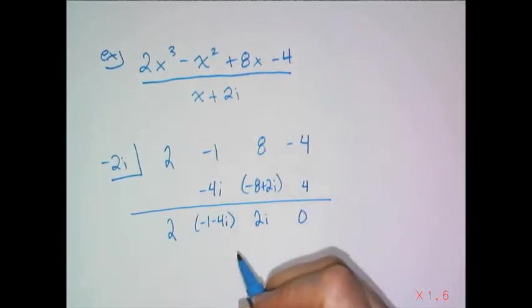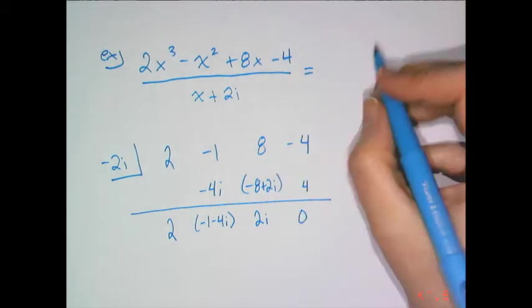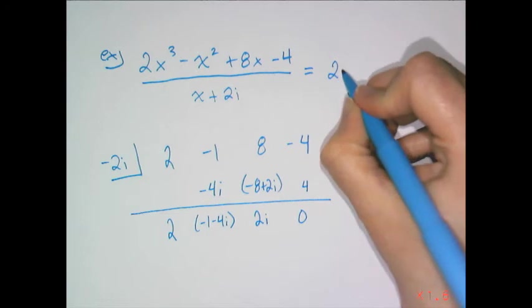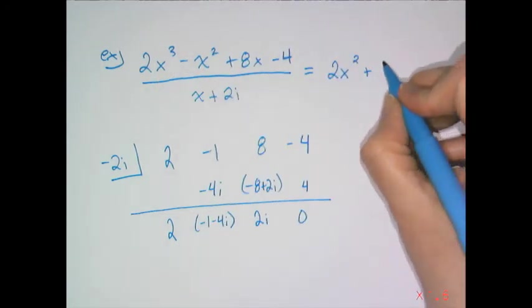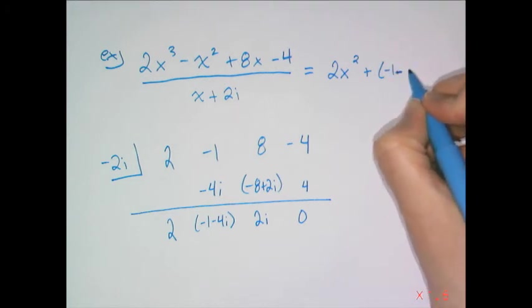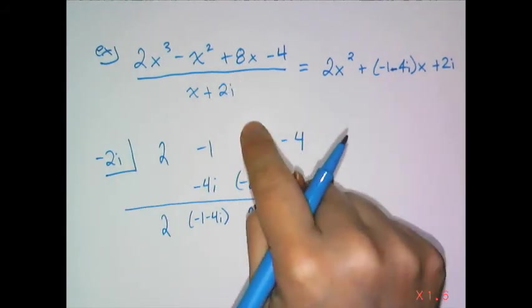So my answer for the division or what this rational expression is equal to is 2x, and remember you have to decrease the degree, squared plus negative 1 minus 4i times x plus 2i. So that's what this division is equal to.